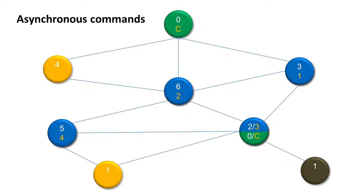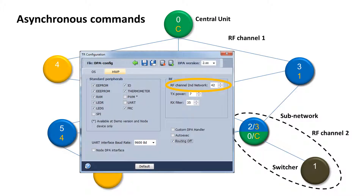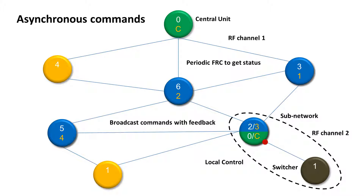Now let's say our blue nodes are lights and you want to control them not only with an acknowledge broadcast from your central unit but locally from a switcher as well. You will use so-called subnetworks. In order to avoid packet collisions, the main network runs on one channel and the subnetwork on a different one. You can set this up very easily in the TR configuration right here. The subcoordinator is then listening on both channels. The module in your switcher is sleeping to save power, and when you push a button the module wakes up and sends the command to the subcoordinator. The light is switched on instantly, and the coordinator of the main network sends out the FRC periodically to check the status of each light. This is how you can control your devices locally using subnetworks and asynchronous commands, send broadcast commands with feedback, or read data and statuses from all nodes effectively with the FRC.